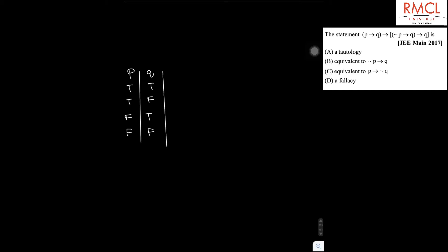Suppose there is a statement A which is equivalent to P implies Q. The truth values for A are: true, false, true, true.